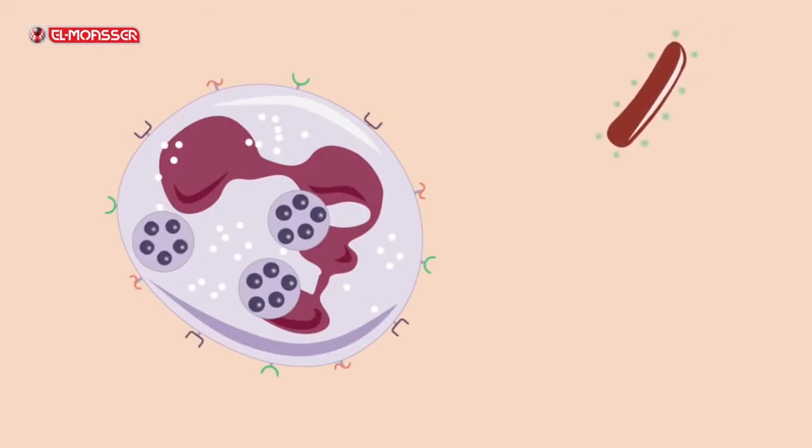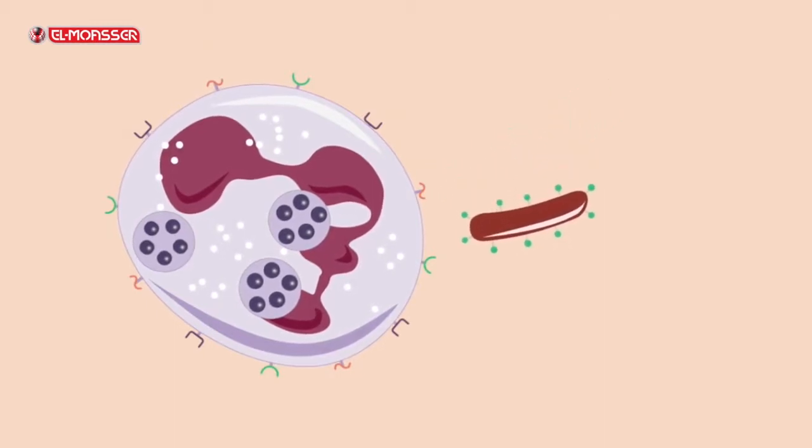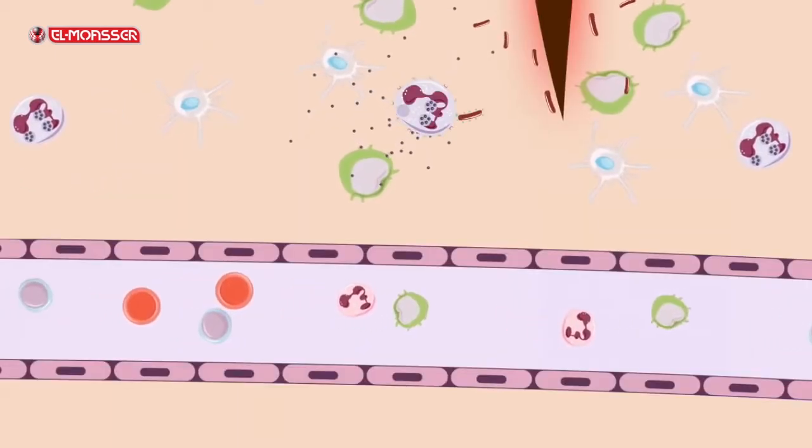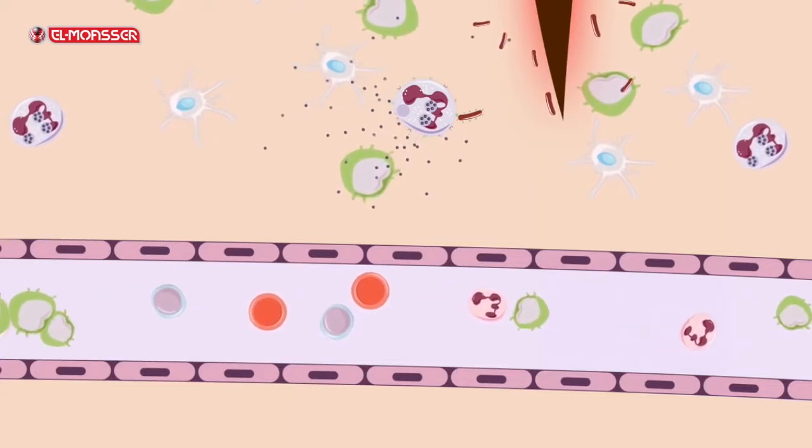On the surface of bacterial cells there are antigens, and on the surface of mast cells and basophils there are receptors through which the antigens of bacteria are recognized. They then bind to them and secrete a substance called histamine. This substance spreads in the area of injury, reaching the blood vessels and causing inflammation.